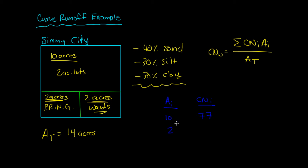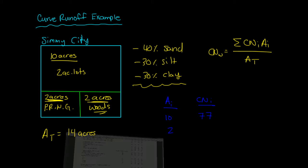And then we have this second area of paved road with gutters. There's 2 acres there. So we come to this chart, we look for paved road with gutter, which is right here. Paved road with curbs and gutters, storm sewers. And we come over here, and we read that it's 98 for group C.